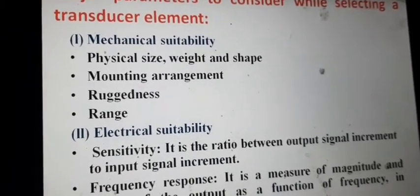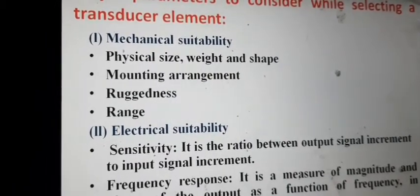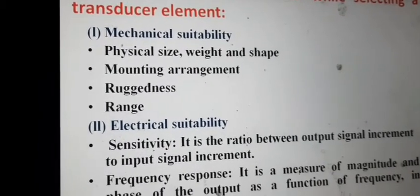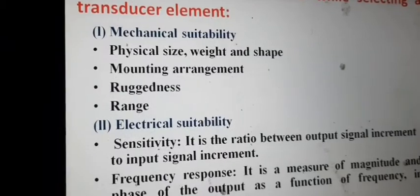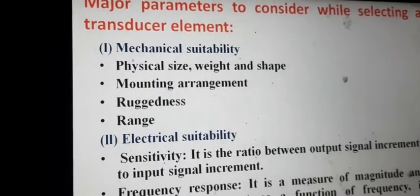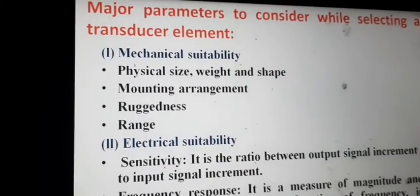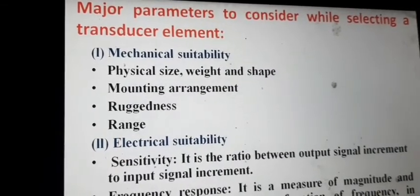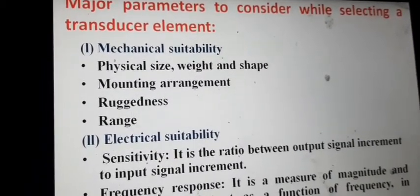From mechanical suitability, we should consider the transducer size, weight, and shape — it should be compact or small. For example, when measuring velocity we keep the transducer in the flow field, so a pitot tube or anemometer placed in the flow field acts as an obstruction. It may divert the flow field or direction, causing changes in the measured velocity from the actual velocity. So we should select a compact transducer.